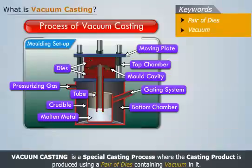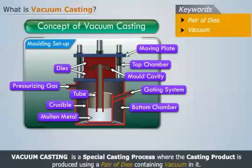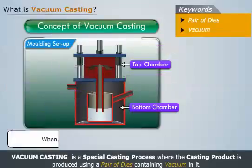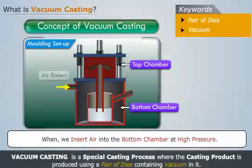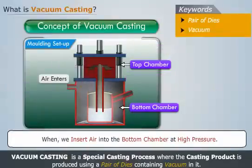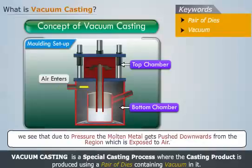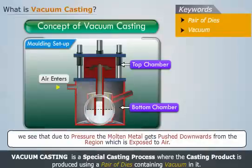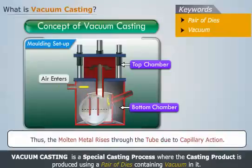Now let's discuss how this mold setup works. When we insert air into the bottom chamber at high pressure, we see that due to pressure the molten metal gets pushed downwards from the region which is exposed to the air. Thus the molten metal rises through the tube due to capillary action.